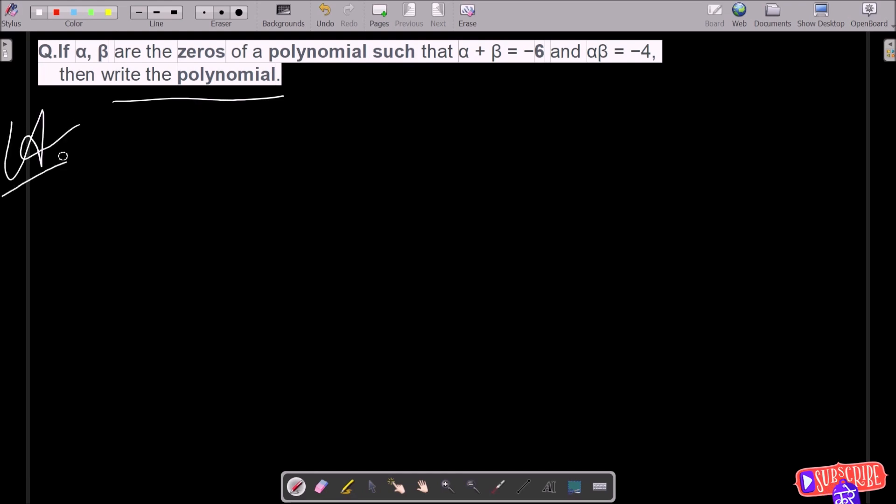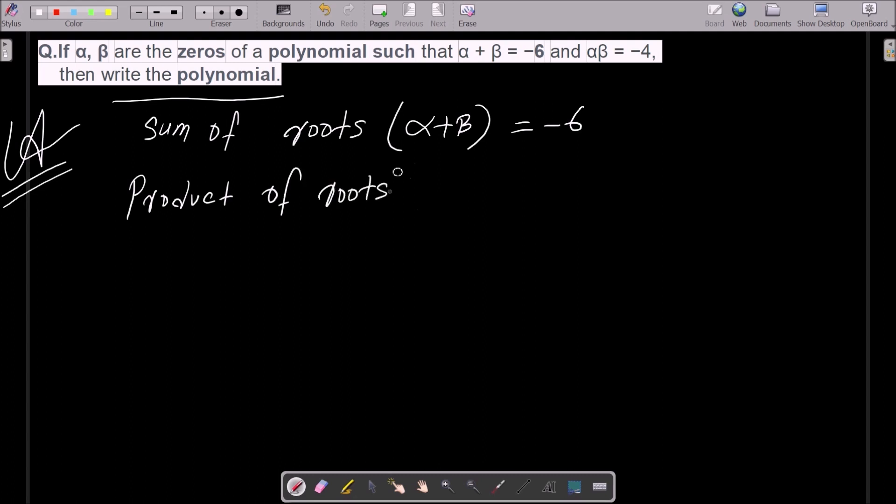First, here I am going to write the given. Sum of roots, that is equal to alpha plus beta, here that is given minus 6. And here product of roots, that is given alpha into beta, the value is now minus 4.